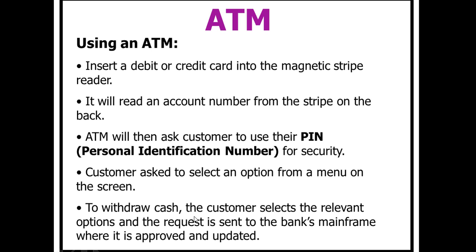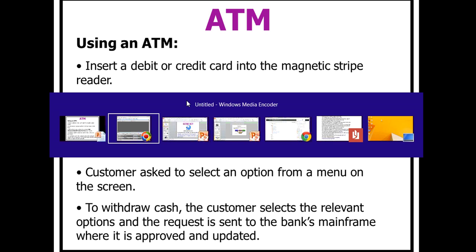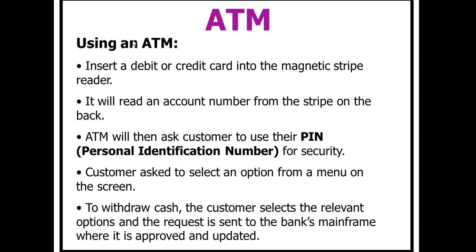When using an ATM, we insert the credit card or debit card. The machine reads the magnetic stripe on the card and gets the account number. The ATM then asks the customer to use their PIN — that's the personal identification number. You really don't want to write 'PIN number' because that would mean 'personal identification number number.' Once you've entered it correctly, the customer can select options from the menu on the screen.